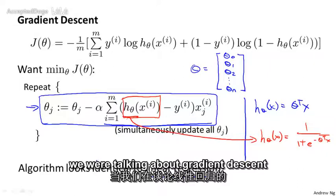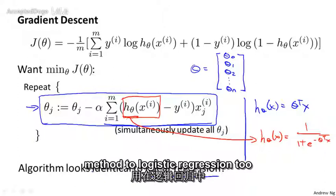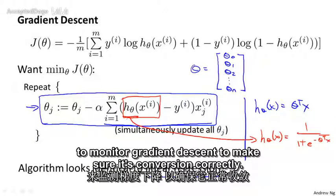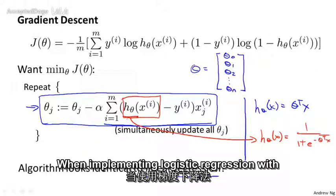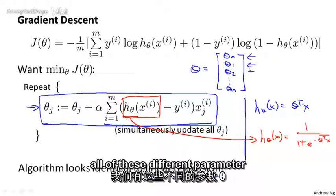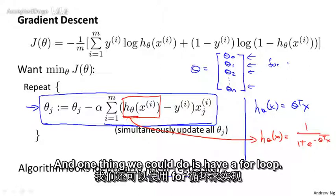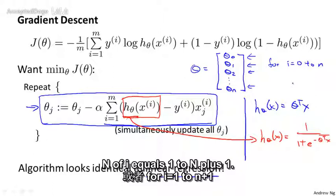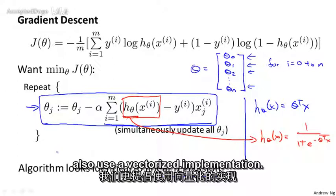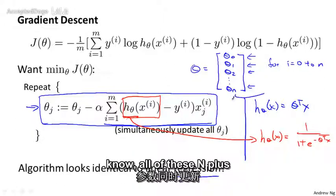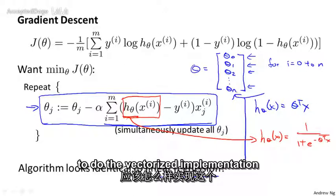In an earlier video, when we were talking about gradient descent for linear regression, we had talked about how to monitor gradient descent to make sure that it is converging. I usually apply that same method to logistic regression too to monitor gradient descent to make sure it's converging correctly. And hopefully you can figure out how to apply that technique to logistic regression yourself. When implementing logistic regression with gradient descent, we have all of these different parameter values, theta_0 down to theta_n that we need to update using this expression. And one thing we could do is have a for loop, so for i equals 0 to n or for i equals 1 to n plus 1 to update each of these parameter values in turn. But of course, rather than using a for loop, ideally we would also use a vectorized implementation so that a vectorized implementation can update all of these n plus 1 parameters all in one fell swoop. And to check your own understanding, you might see if you can figure out how to do the vectorized implementation of this algorithm as well.